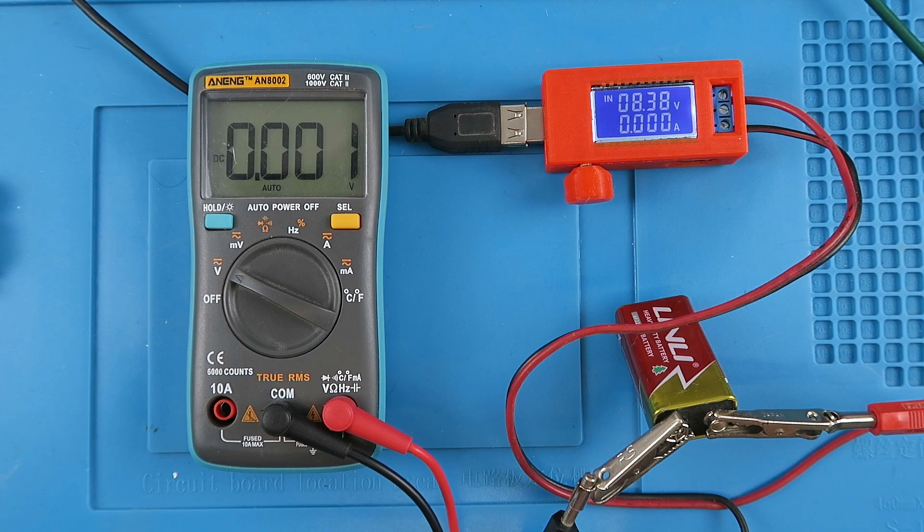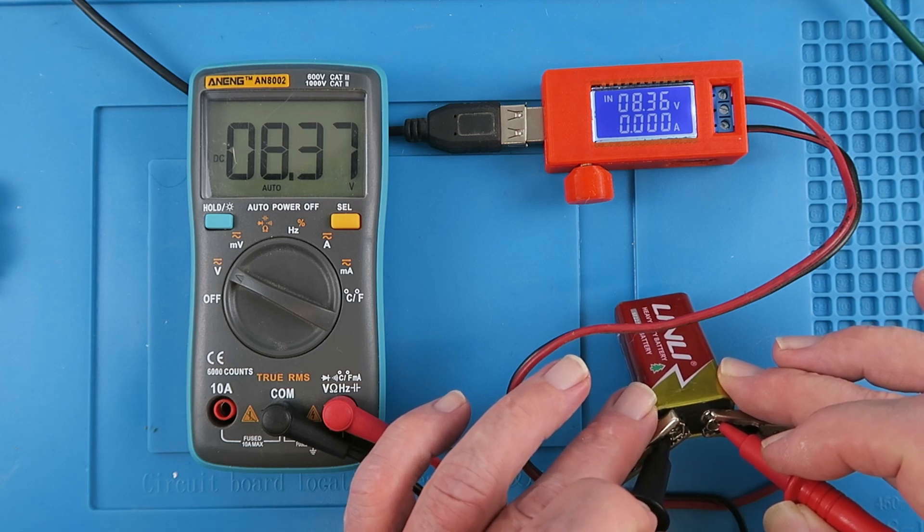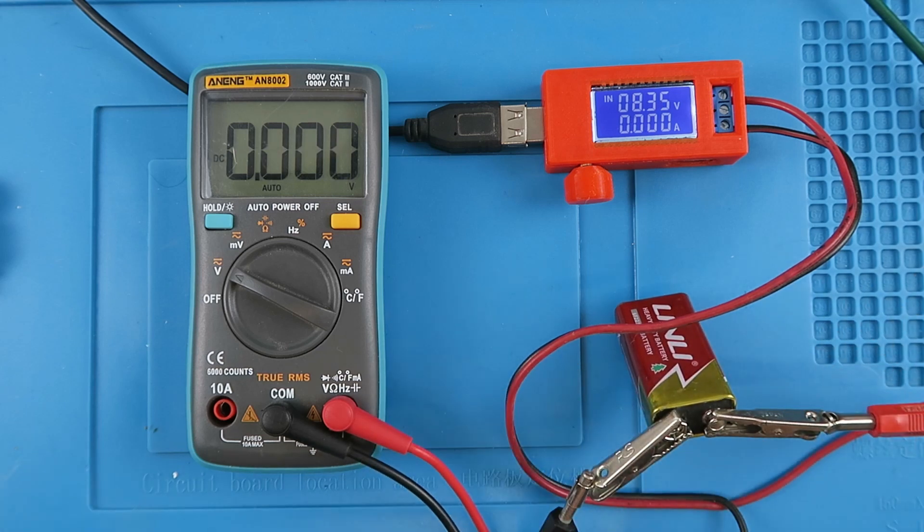So for example, on this little 9 volt battery, that's showing 8.4 volts, it's quite flat this battery. And again, if we just compare that against our other meter, 8.37, 8.36, so still 0.01 in it, which is good enough for me.